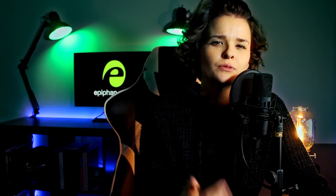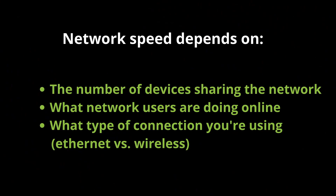Unfortunately, internet speeds fluctuate for all kinds of reasons. Major factors include how many devices are sharing the network, what those devices are doing, and the kind of connection you're using for streaming.